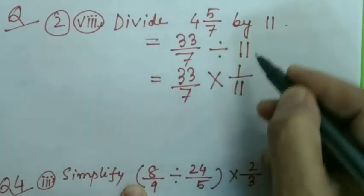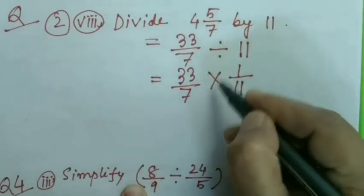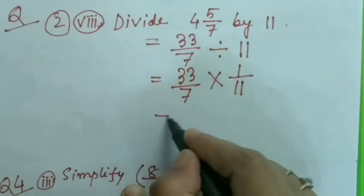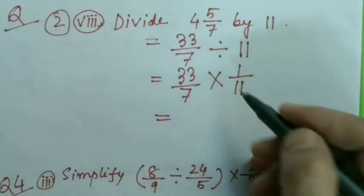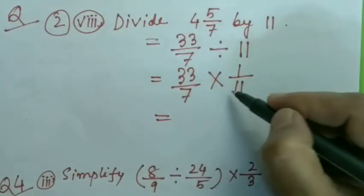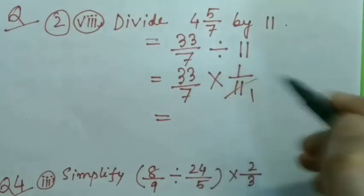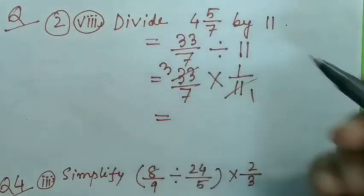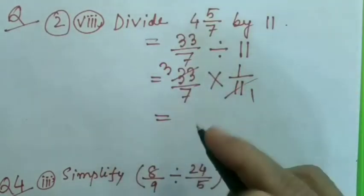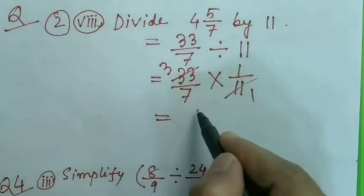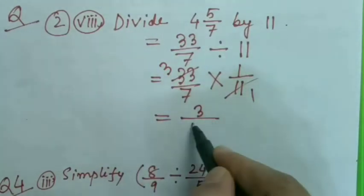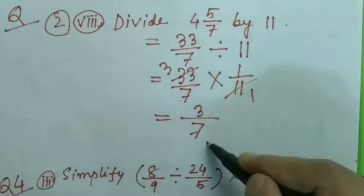Now by the rule of multiplication, I can cancel to simplify. 3×1=3 and 7×1=7, so the answer is 3/7.